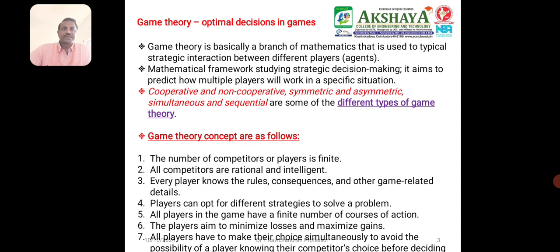Today we are discussing about the first topic: Game Theory and Optimal Decisions in Games. Game Theory is basically a branch of Mathematics that is used to study strategic interactions between different players — a mathematical framework for studying strategic decision making — aimed to predict how multiple players will behave in specific situations. The situations include different types of games: cooperative and non-cooperative, symmetric and asymmetric, simultaneous and sequential.